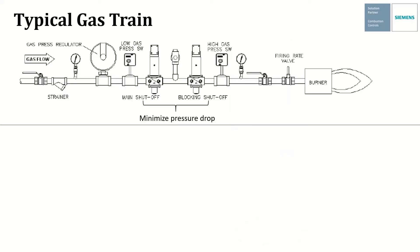The typical gas train has a gas pressure regulator and then two safety shutoff valves. For good control, the pressure drop across the main and blocking shutoff valve is minimized.